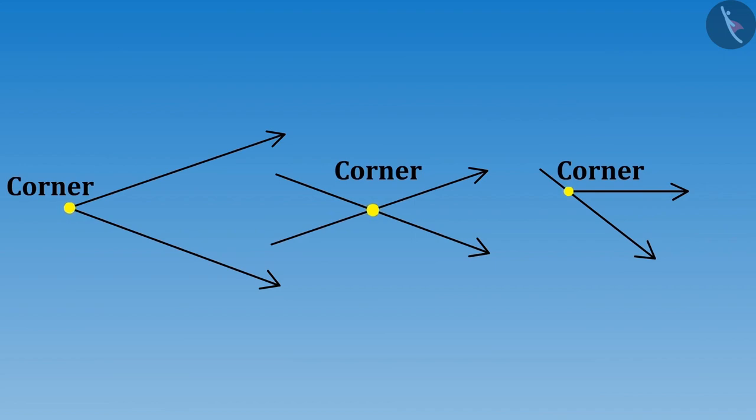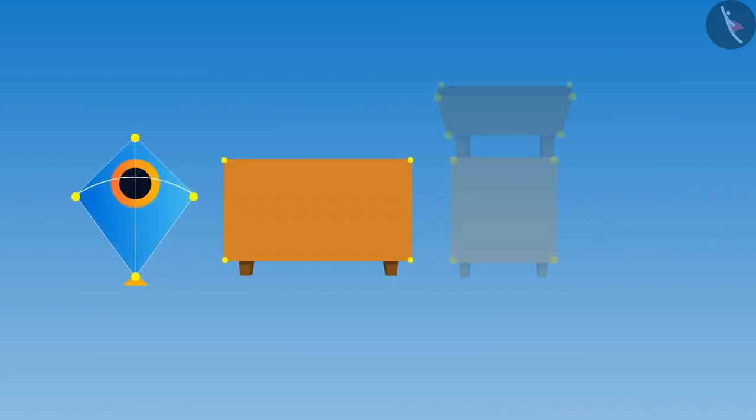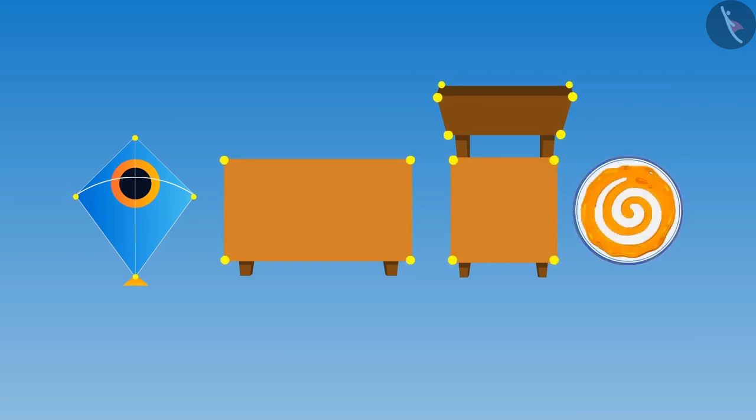So sister, does this mean that corners are only formed in objects like kite, table and a chair? And the shapes of jalebi and plate do not have corners? Yes Riva,